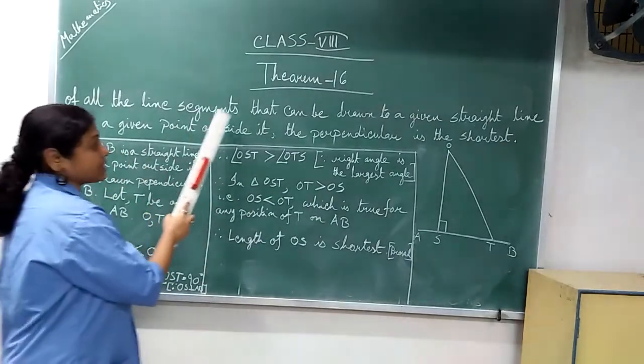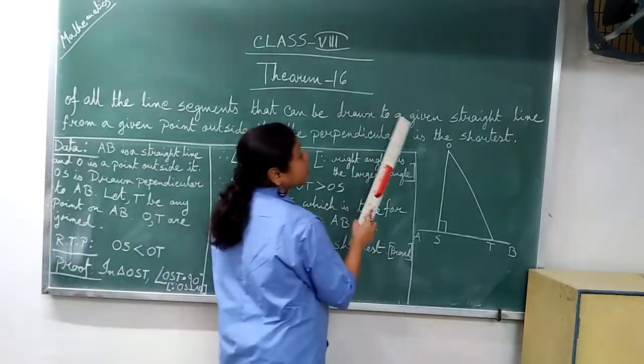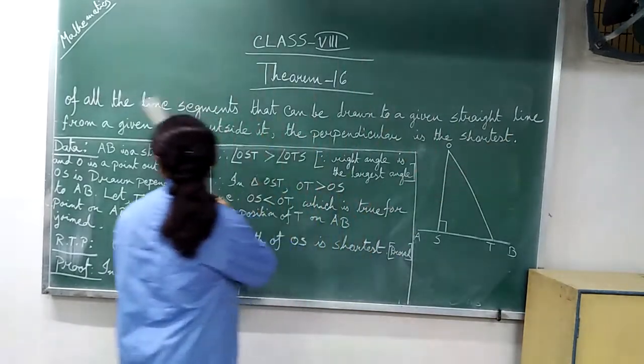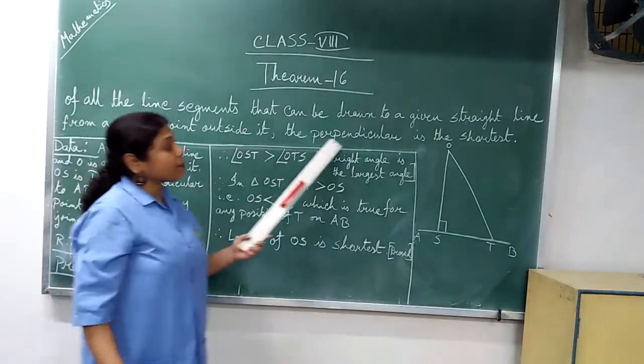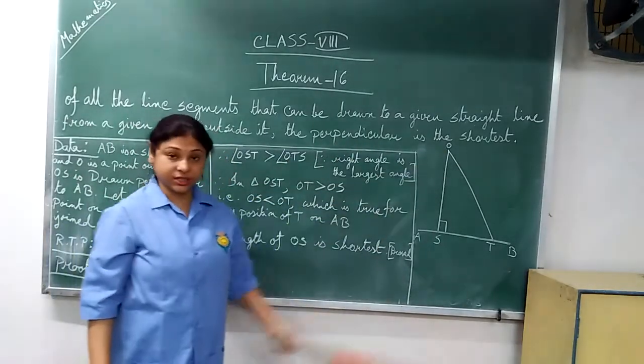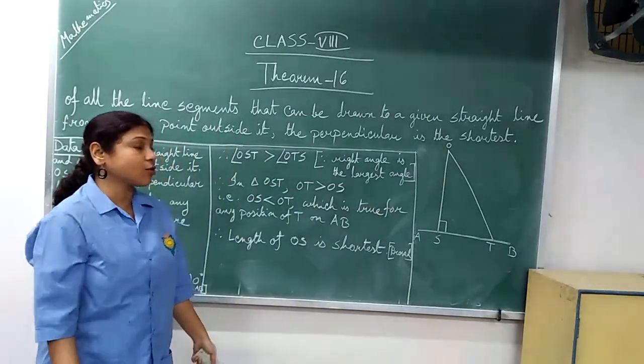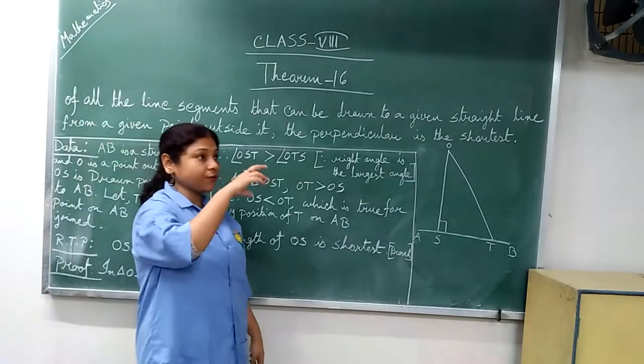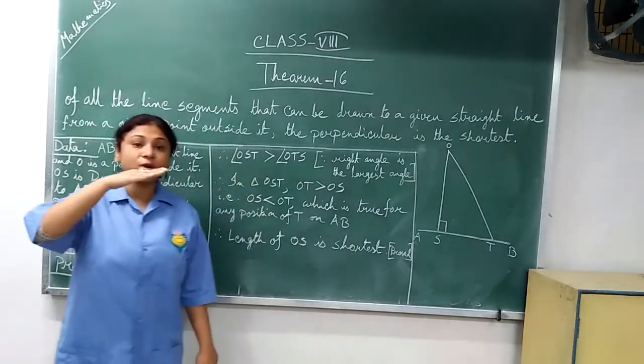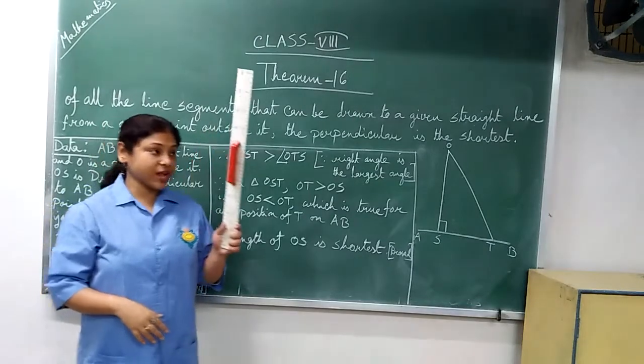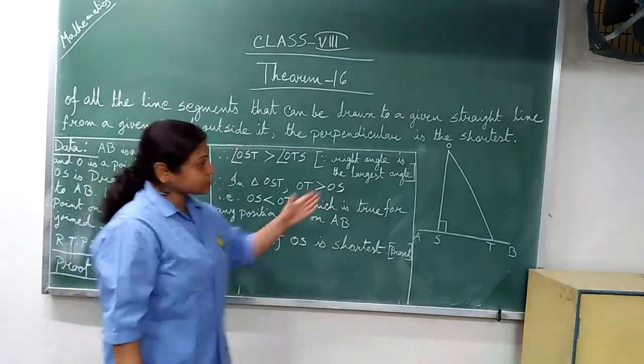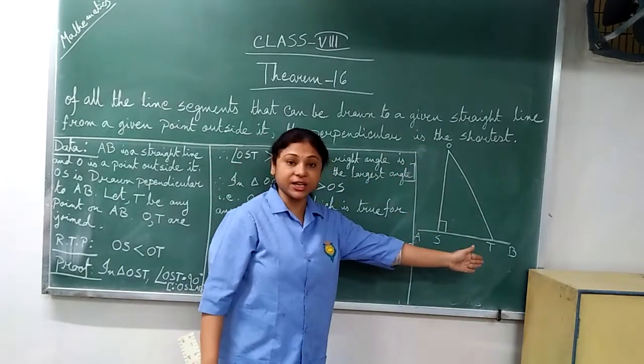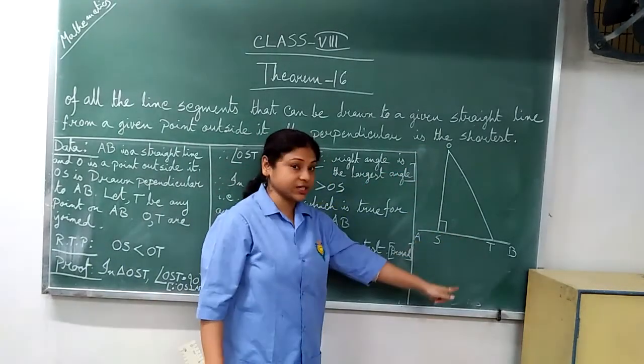Of all the line segments that can be drawn to a given straight line from a given point outside, the perpendicular is the shortest. You know I already told you that from a line, perpendicular distance, that means straight line distance is the shortest distance. Because the lines which go like this tangentially, it is not the shortest distance.